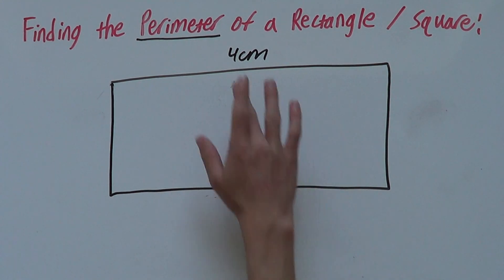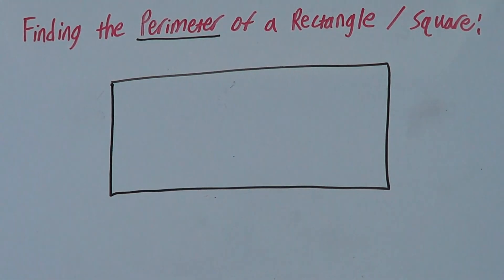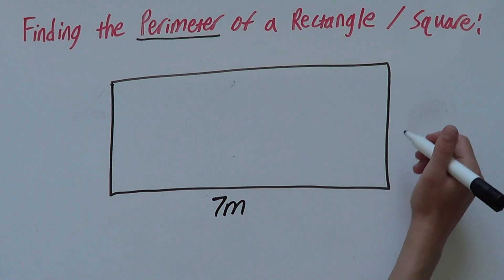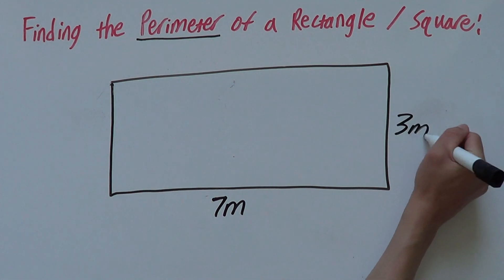We'll look at one more example just to ensure that you know this. This time, we will have this side be 7 meters and this side 3 meters.